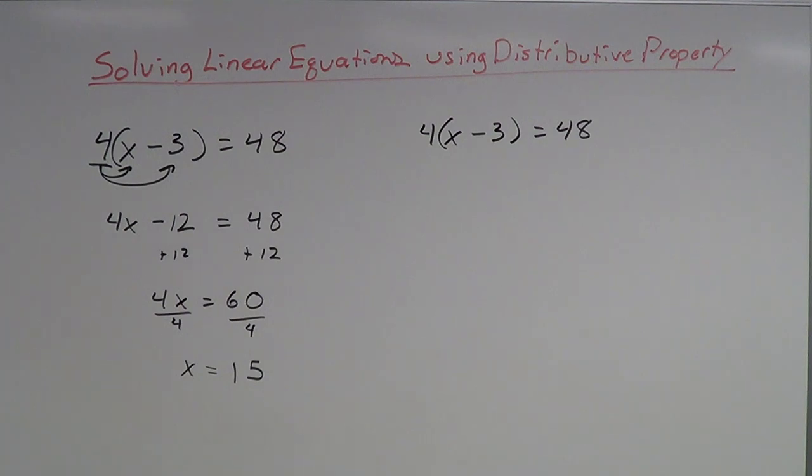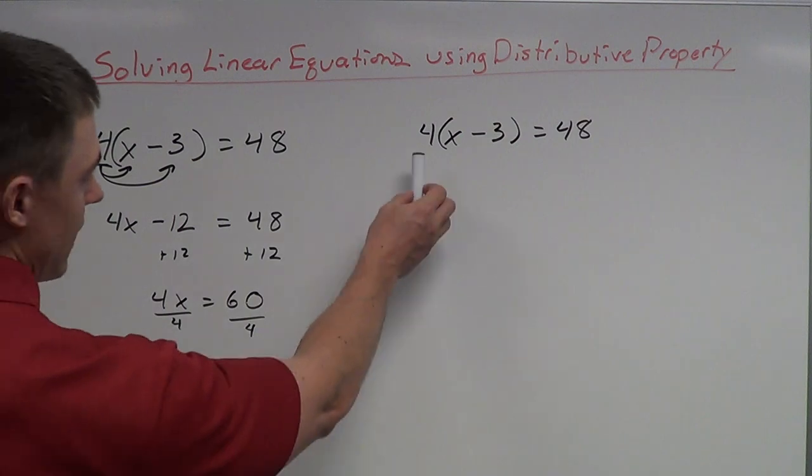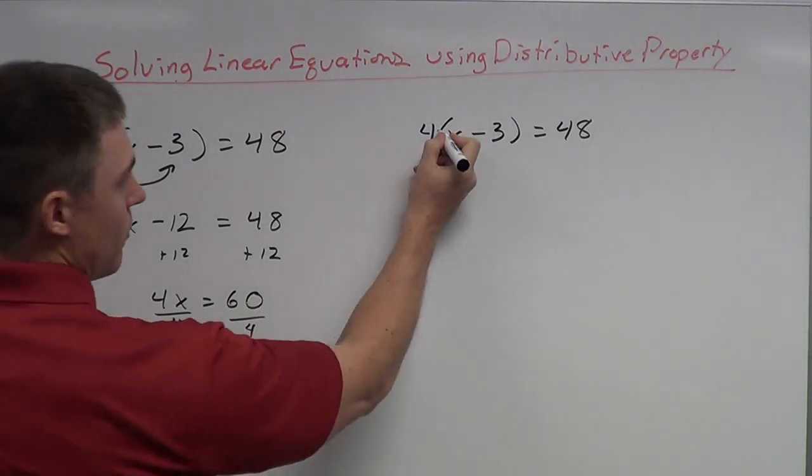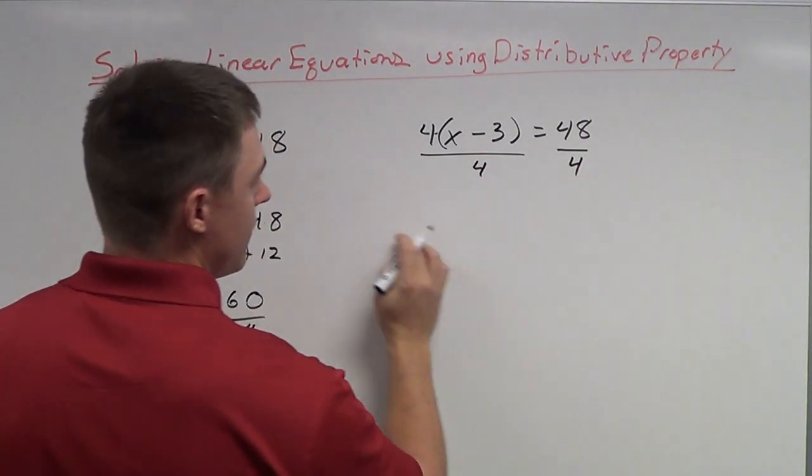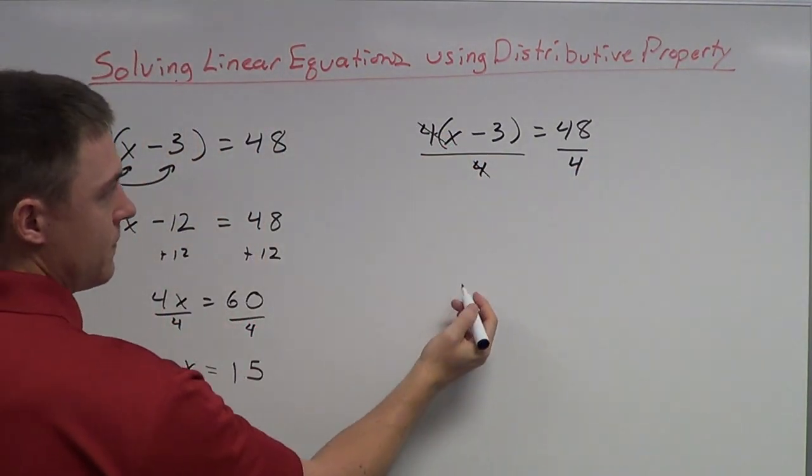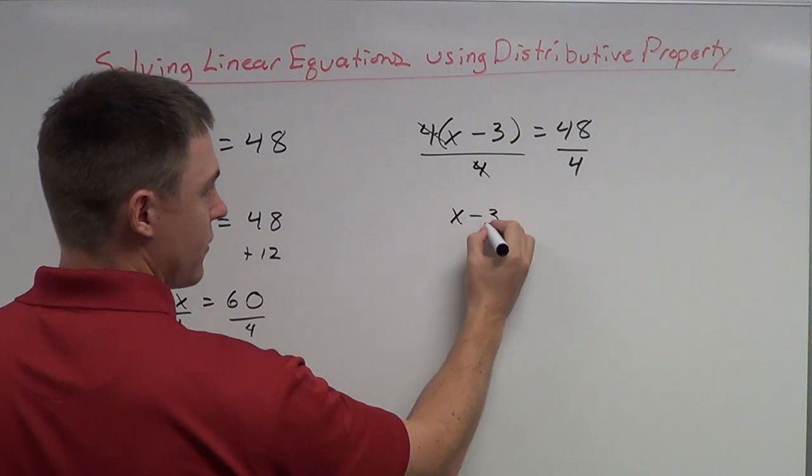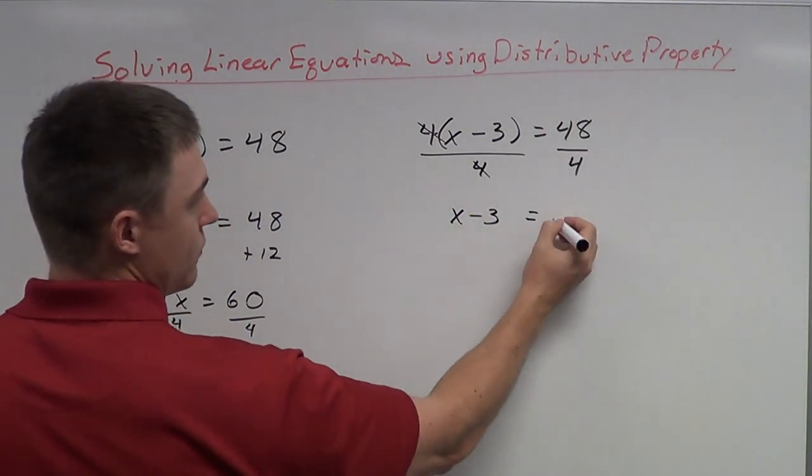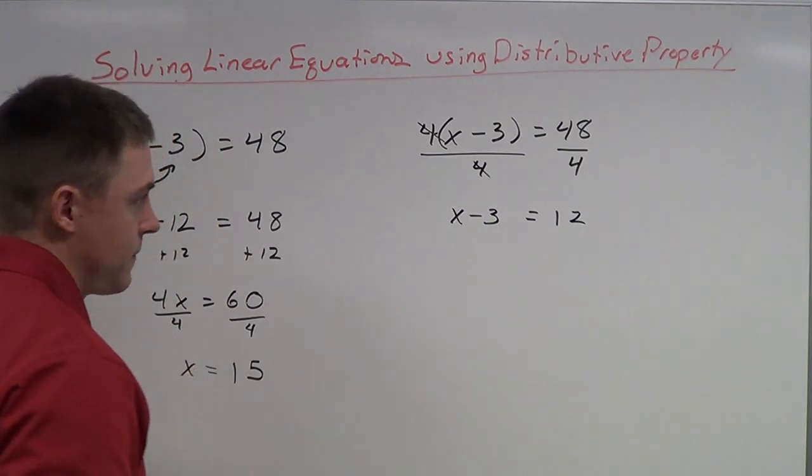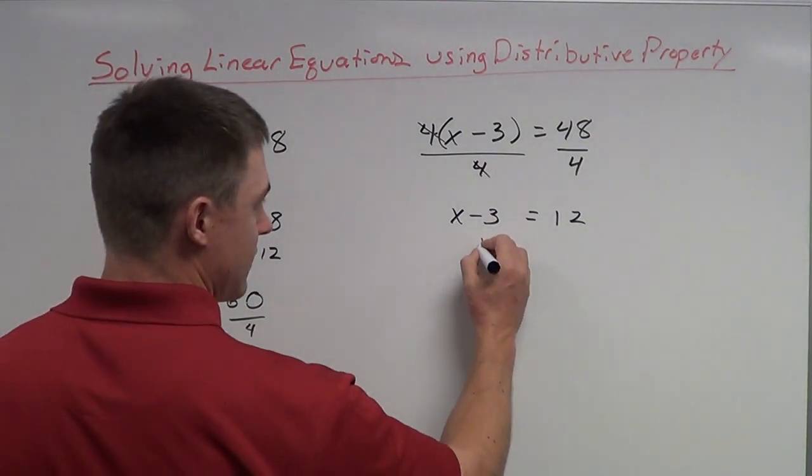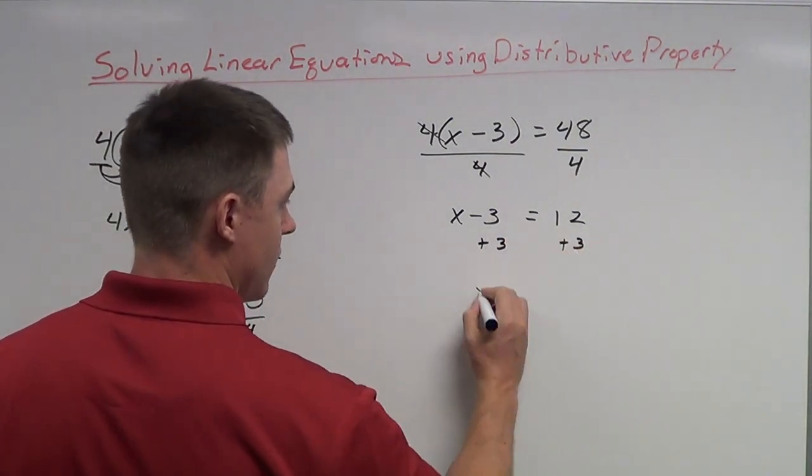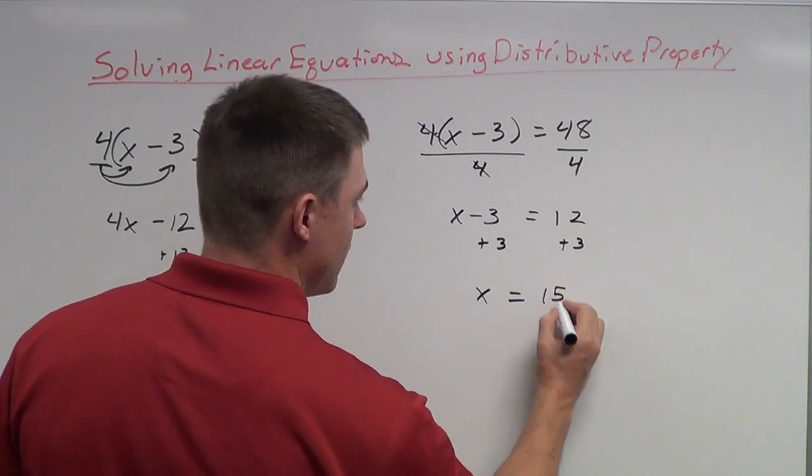Now for this other one, I'm not going to use distributive property. I'm going to use a different method. So instead of taking the 4 and distributing it, I'm going to take the 4 since it's multiplying times x, I'm going to divide by 4 instead. So 4 divided by 4, those cancel. I'm just left with x minus 3 equals, 4 goes into 48, 12 times. And that was actually pretty simple. That might be an easier way of solving because the only thing I have to do is get rid of this negative 3. So I have to add 3 to both sides. So x in this case is equal to 15.